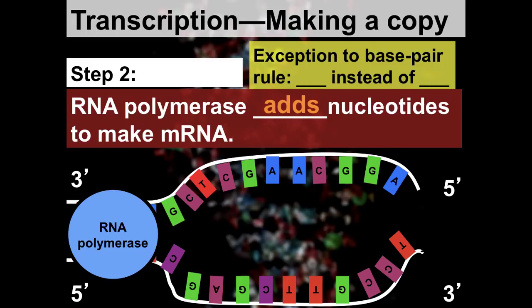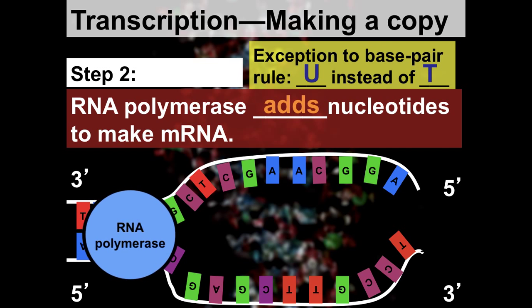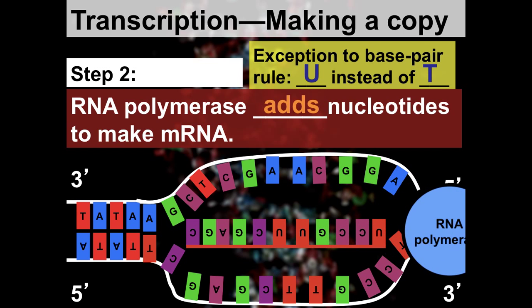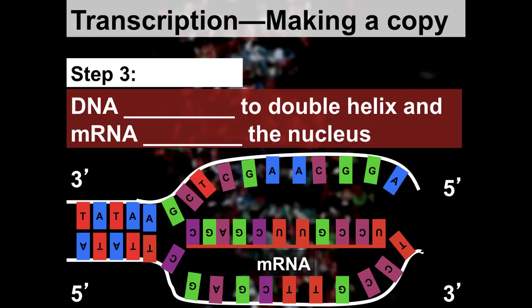The base pair rule applies here with one exception: in RNA, you have U (uracil) instead of T (thymine). So in DNA, A pairs with T, but here A pairs with U. On messenger RNA we don't have any T's — we have uracil. So if you look at the strand made: G pairs with C, C with G, T with A, and A with U.